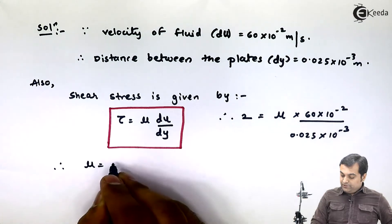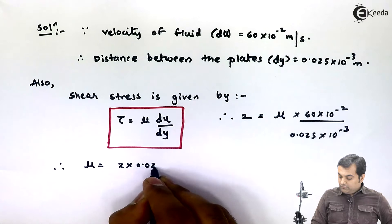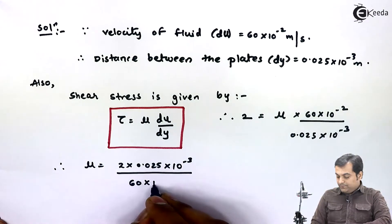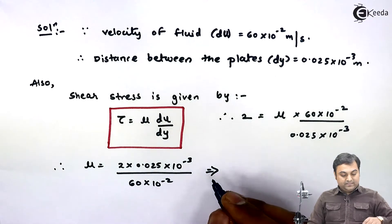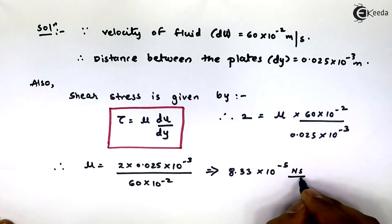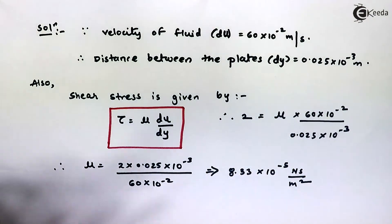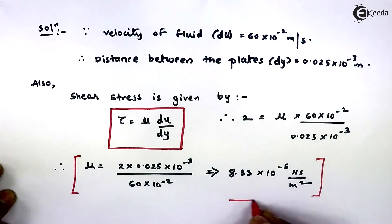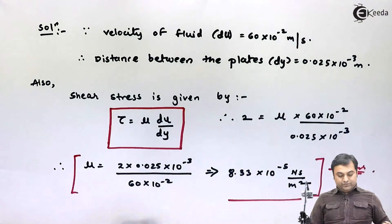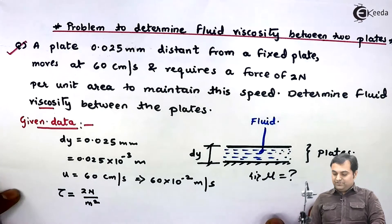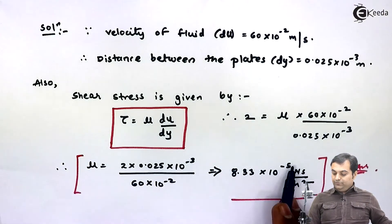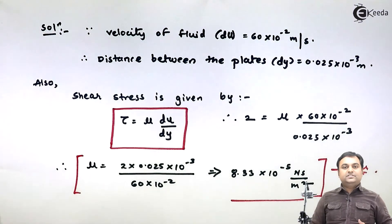Therefore, mu will be equal to 2 multiplied by 0.025 into 10 raise to minus 3, divided by 60 into 10 raise to minus 2. From this, the dynamic viscosity answer is 8.33 into 10 raise to minus 5 Newton second per meter square. The viscosity of the fluid between the two plates is 8.33 into 10 raise to minus 5 Newton second per meter square, and with this we complete this question.